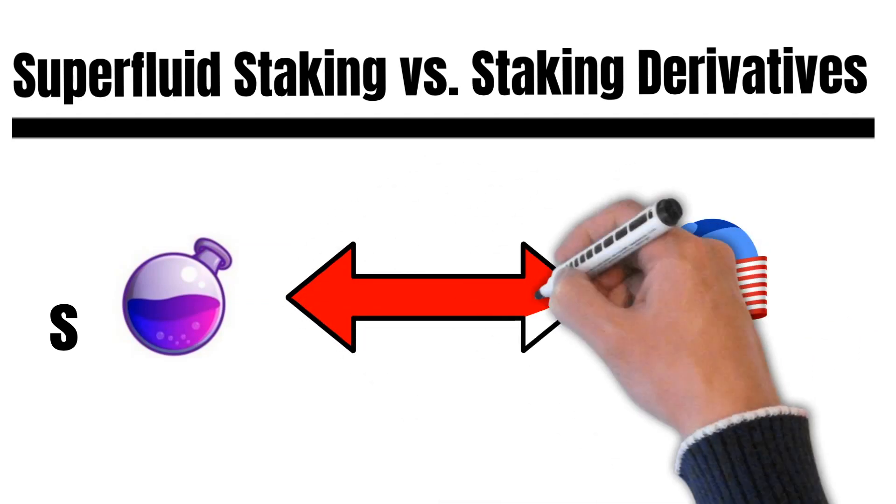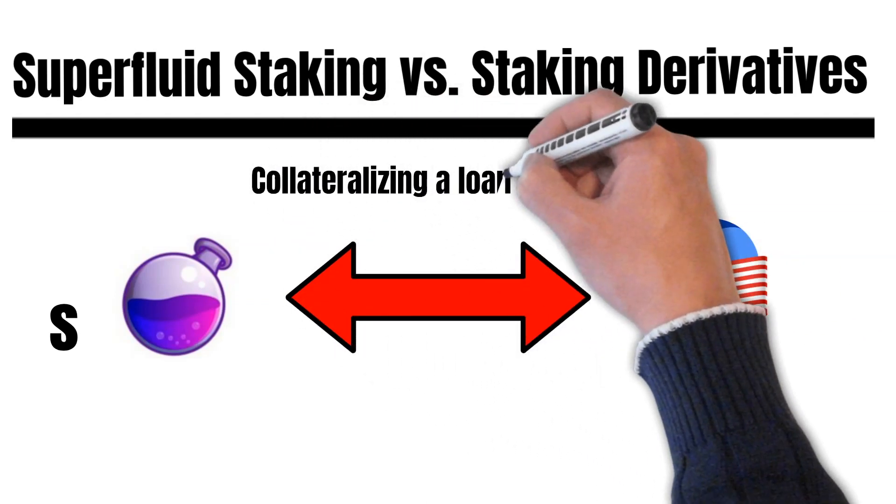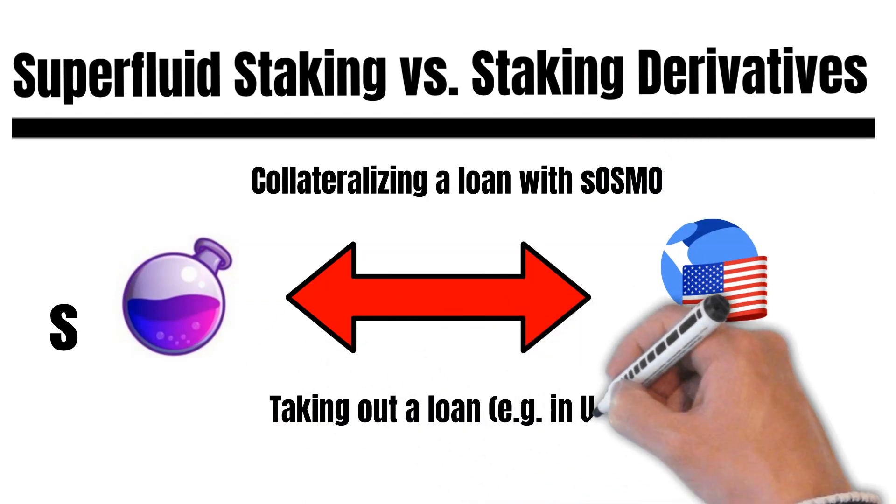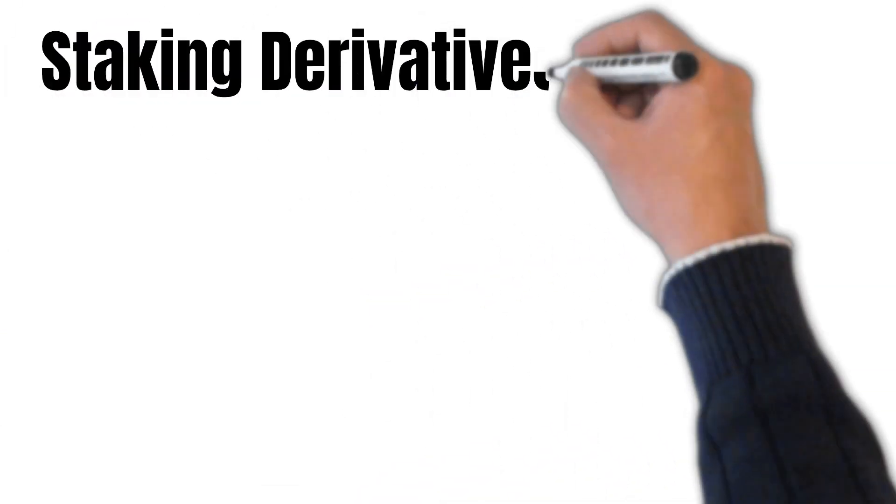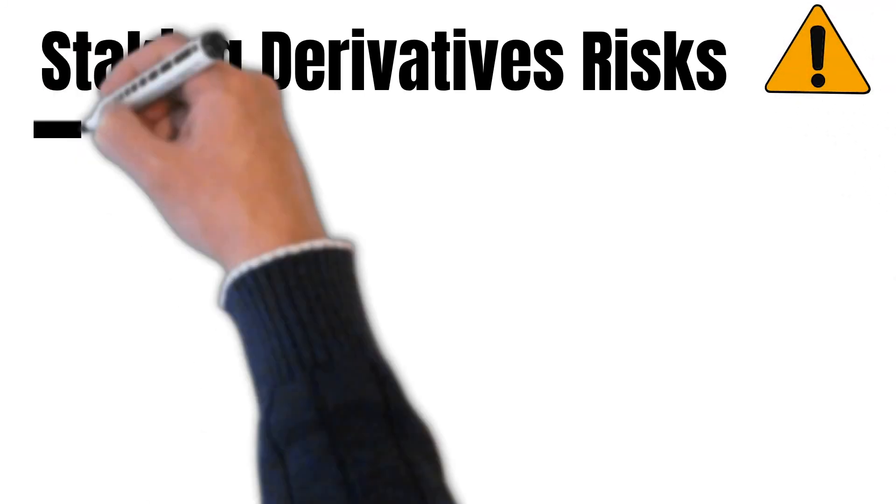And because of this, you could use this staking derivative, for example, as a collateral in DeFi. This helps you to reach a high level of capital efficiency. However, it tends to be very risky for the whole network.